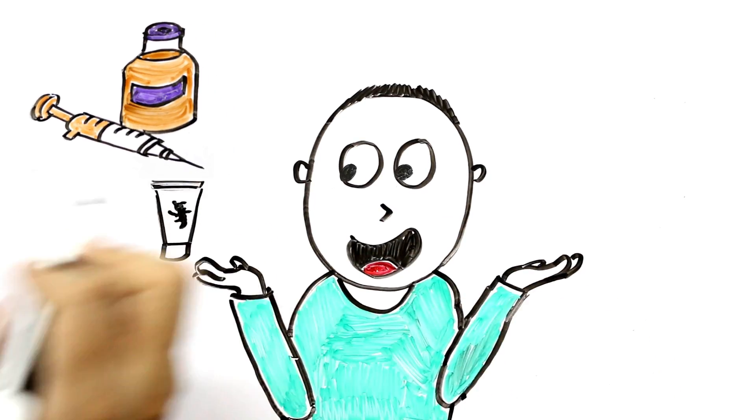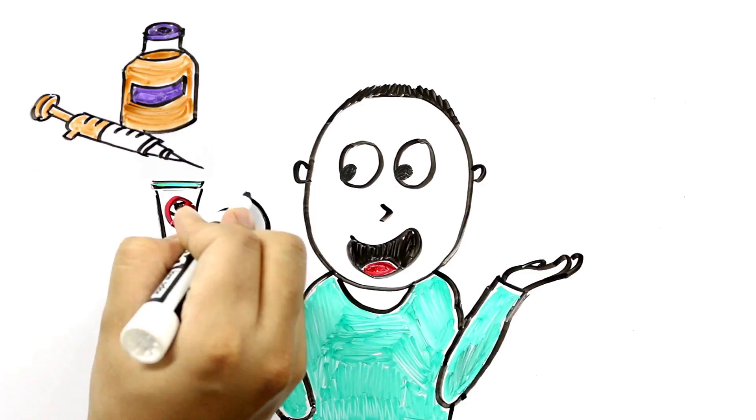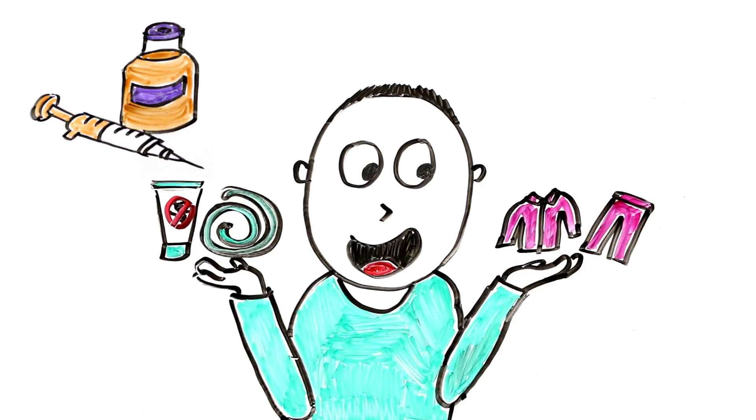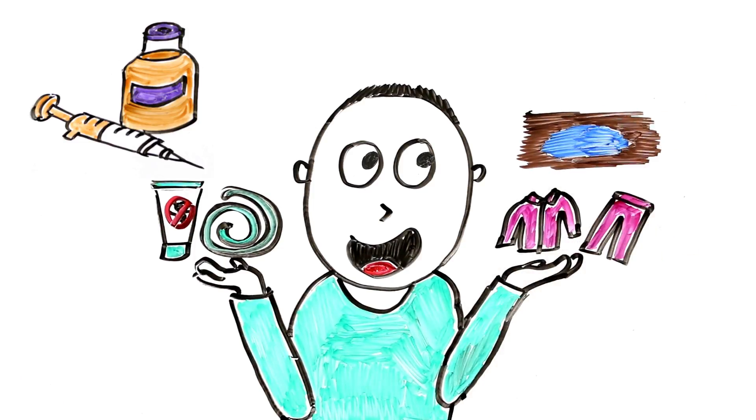Till then, precautionary measures such as wearing mosquito repellents, using screens to keep mosquitoes outside, covering the whole body with clothes and making sure there's no standing water inside or outside the home must be taken. Precaution is the best method to eradicate this disease. So be careful, stay safe and stay healthy.